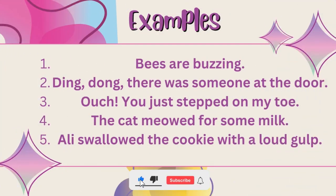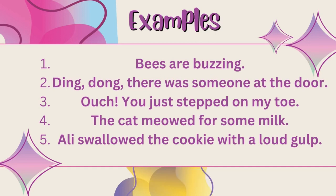اب ہم اس کی کچھ examples دیکھتے ہیں۔ سب سے پہلے ہے 'bizarre buzzing' — مکھیاں بن بنا رہی ہیں۔ اس جملے میں 'buzzing' onomatopoeia ہے کیونکہ اس کو دیکھتے ہی ہمارے ذہن میں مکھیوں کا concept آ جاتا ہے۔ 'Ding dong, there was someone at the door' — ding dong بیل کی آواز ہے، اس کو سنتے ہی ہم imagine کر سکتے ہیں کہ یہ کسی گھنٹی کے لیے بات کی گئی ہے۔